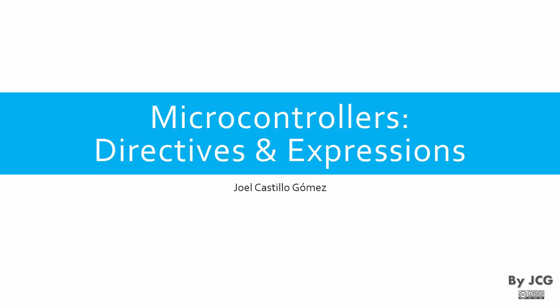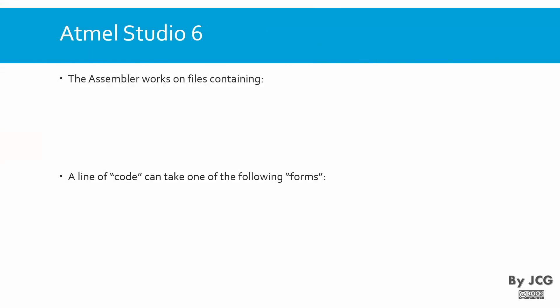Welcome. In this video we will talk about microcontrollers, specifically about directives and expressions. When we have a programming file, the assembler has lines of code, and those lines can have either instructions or mnemonics, which are the ones we have been seeing. Lines can also have directives, labels, comments, or empty lines. So a line of code can take any of the following forms.